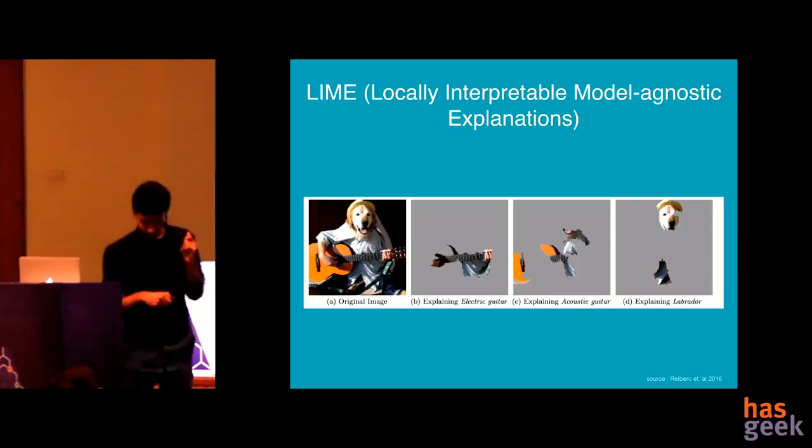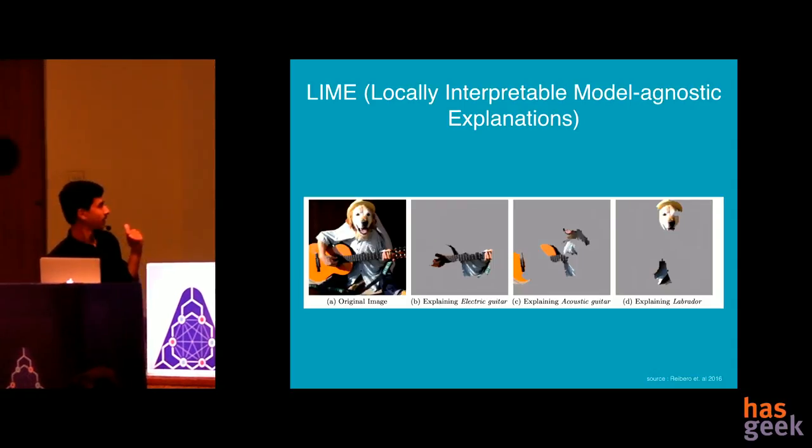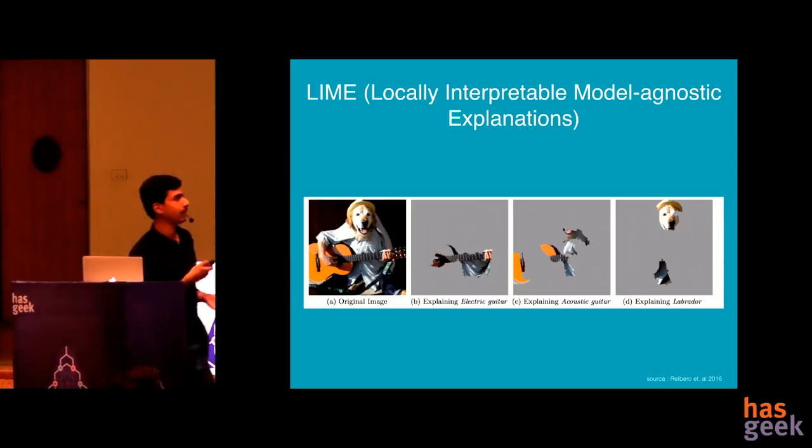This is again a caption model where this is an image of a dog holding a guitar very strangely. And you see that when a caption is made for electric guitar, it shows this portion of the image as an explanation. So it shows that the model is looking into that particular area to explain, to predict that it's an electric guitar there. For acoustic, it's looking at the wooden portions if you see. So unfortunately it's still getting confused between electric guitar and acoustic guitar because almost the same string shape and color is there. And Labrador, it's explaining using this face and a small image here.